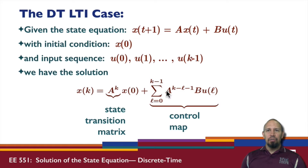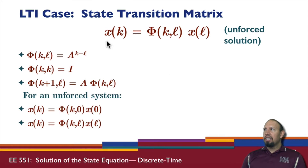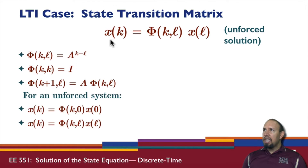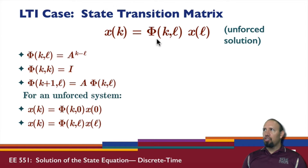We can extend this result to a more complicated case. In general, a state transition matrix satisfies the condition that x at time k is given by the state transition matrix times x at time l, for unforced conditions. So going from time l to time k, the state transition matrix is just a matrix that multiplies the state at l to give the response at k.